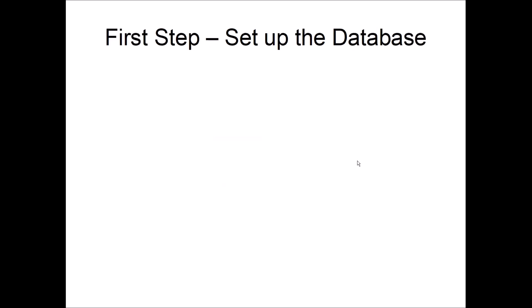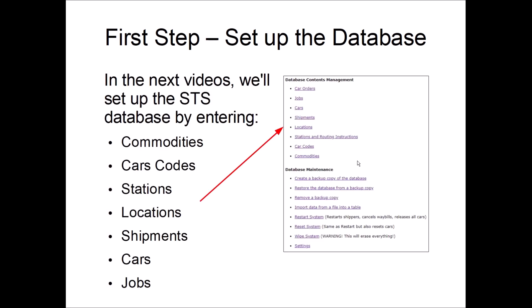To set up the database, this is the information you're going to need. As mentioned, if you already have a car card and waybill system or another computerized car forwarding system, you already have this info — commodities, car codes, and so on. We'll enter those into the database. Once we've finished entering everything, we'll make use of one of the utility functions at the bottom, specifically the one that does a backup copy. Since entering all this data is a one-time task, we want to make sure we have a good backup copy once we're done.